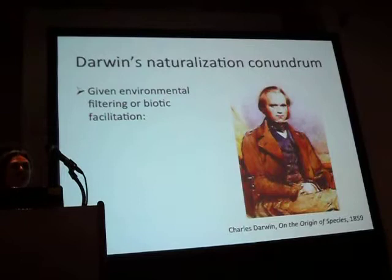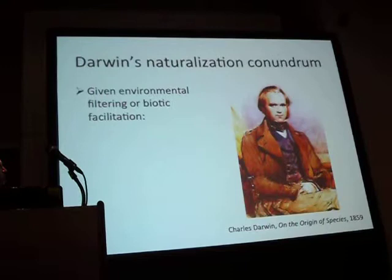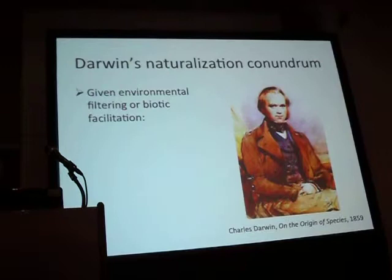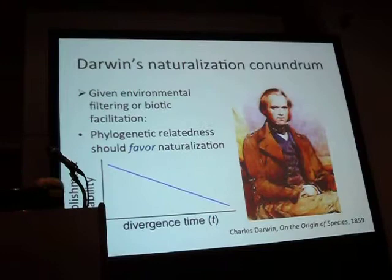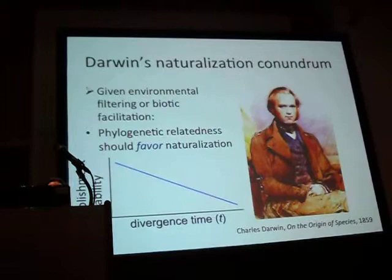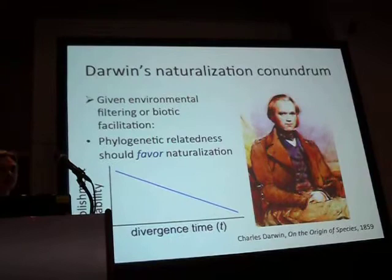This becomes a conundrum, because depending on the type of environment you're looking at, you could expect different patterns. If you think about positive attraction with mutualists or resource species, then you'd expect that phylogenetic relatedness should favor naturalization — closely related species that are not very diverged are going to have a high probability of becoming established, and as diversification and divergence continues, there's going to be a smaller chance of establishment.